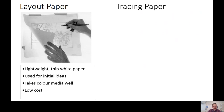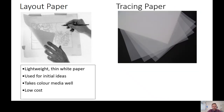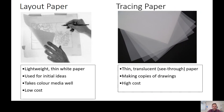Paper type number two is tracing paper — one you're probably more familiar with and have used in school or at home. Similar to layout paper, it's thin and translucent — it's see-through paper. In fact, it's more see-through than layout paper. Layout paper is semi-transparent, but tracing paper is fully translucent.